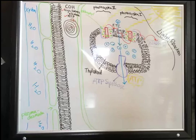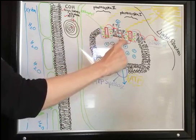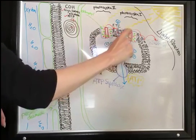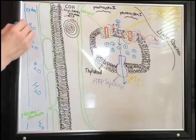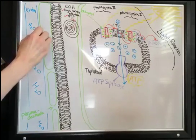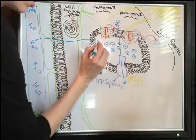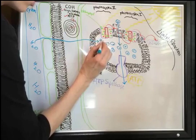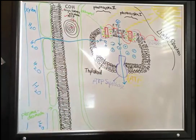We have one problem: these electrons left these chlorophylls, made their way down the electron transport chain into photosystem I, up again and onto NADPH. So if we want to run this process again, we've got to replace those electrons. The plant uses water, which passively diffuses by osmosis into the cell. The water gets taken right over to photosystem II. So there's our H₂O.